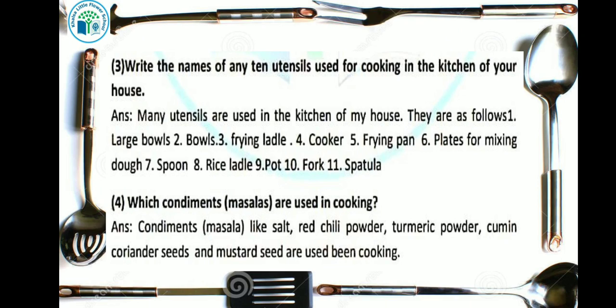Next: which condiments (masalas) are used in cooking? Condiments and masalas like salt, red chili powder, turmeric powder, fenugreek seeds, mustard seeds, asafetida powder, cumin, coriander seeds powder, etc. are used in cooking. These include salt, red chili powder, turmeric powder, methi seeds, rai/mustard seeds, hing powder, and jeera/coriander powder.